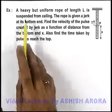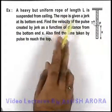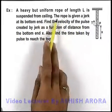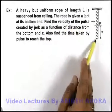In this example we are given that a heavy but uniform rope of length L is suspended from the ceiling. The rope is given a jerk at its bottom end.